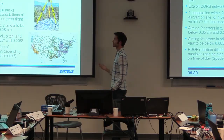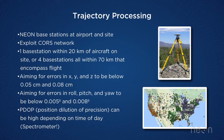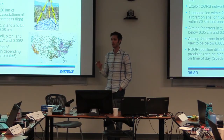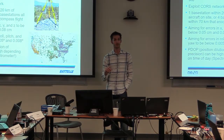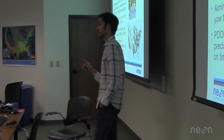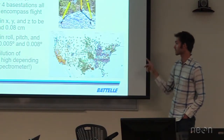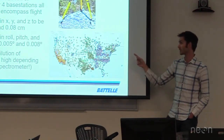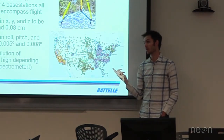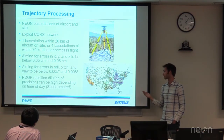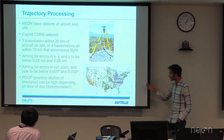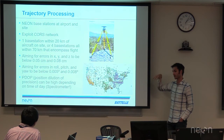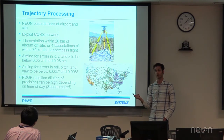In order to position all of the LiDAR data, we also have to determine our trajectory using GPS IMU information. We set up GPS base stations in the local vicinity of our survey areas. We try to exploit the CORS network — GPS base stations set out across the United States run by local or federal governments — and use those stationary GPS sites with accurate coordinates to differentially correct the GPS trajectory.